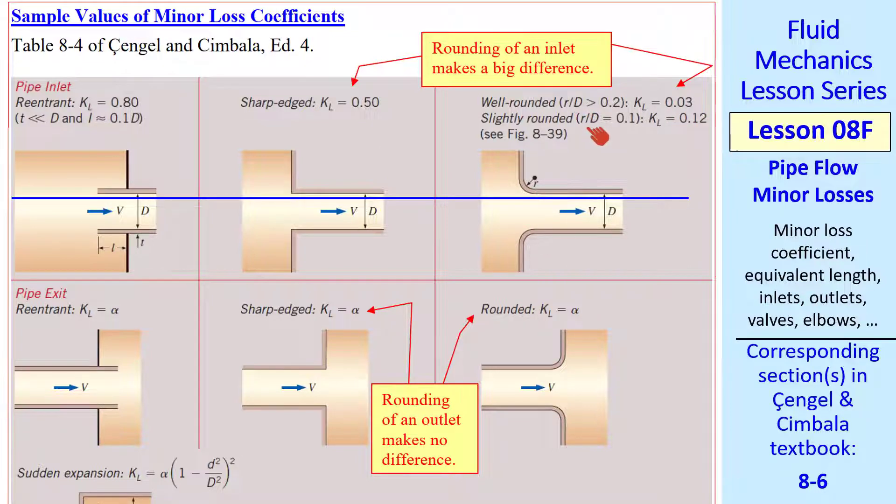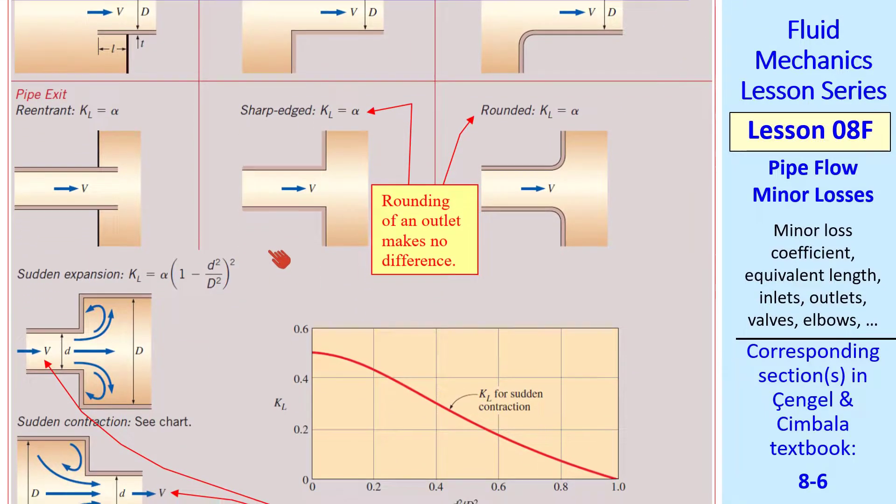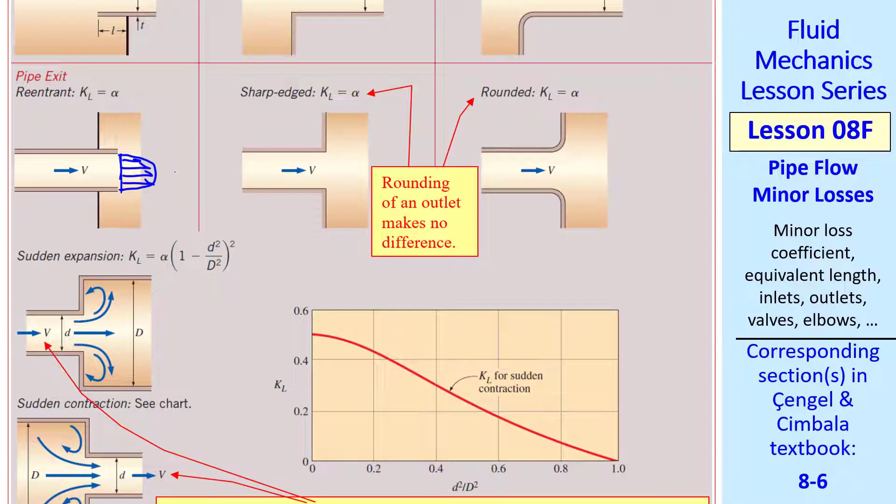At outlets or exits, the fluid comes out with some kind of velocity profile, which becomes a jet. There are eddies that cause dissipation of the kinetic energy.